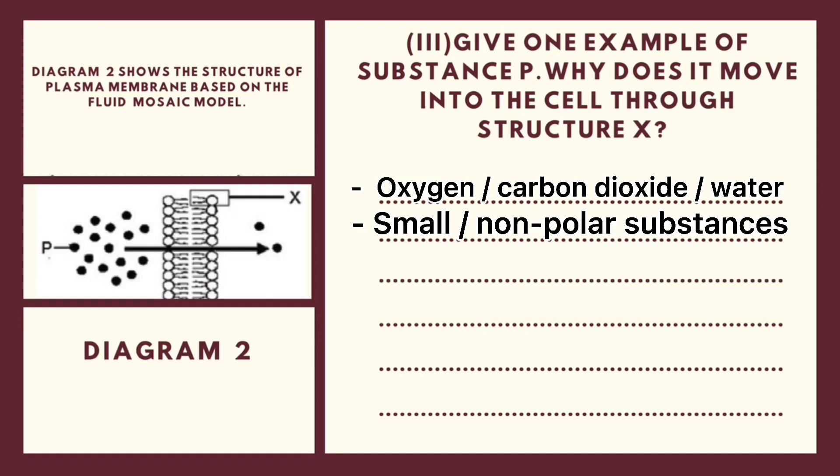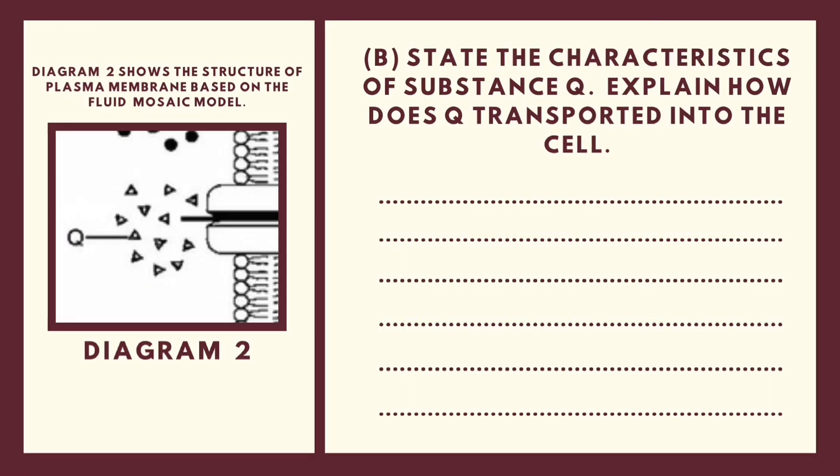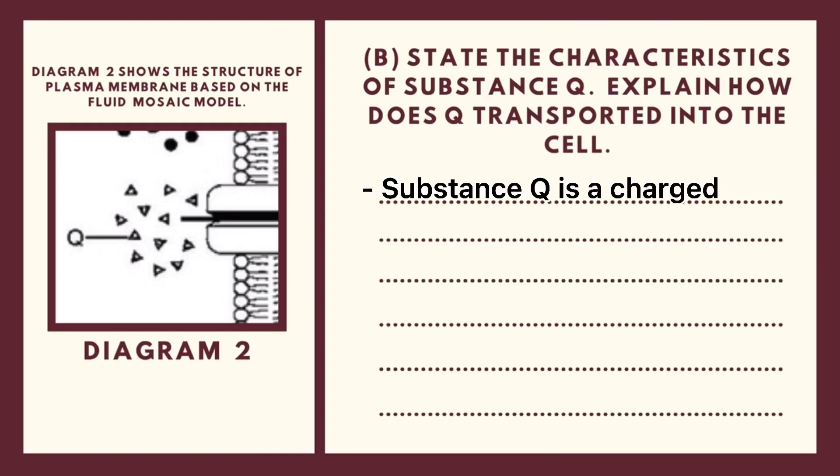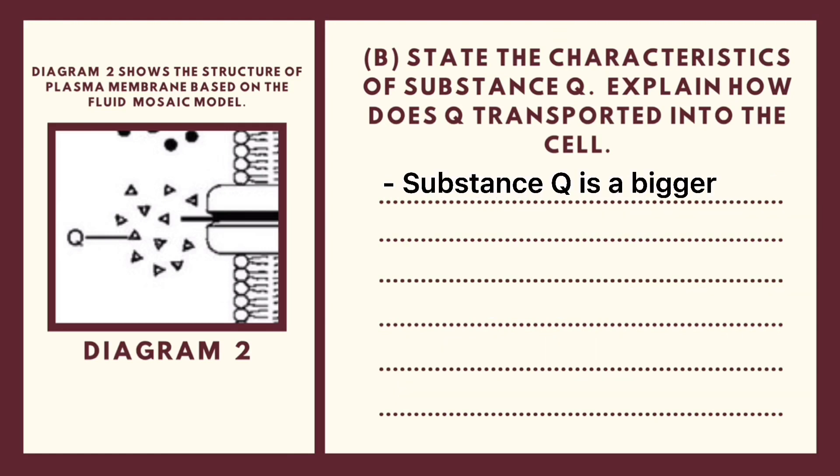Other than that, you can also add either fatty acid, glycerol or vitamin ADEK because it is a lipid soluble substance. Now, we are on the last question. State the characteristic of substance Q. So, explain how does Q transported into the cell? Substance Q is a charged and small molecule. It needs pore protein molecule to transport it into the cell by facilitated diffusion.